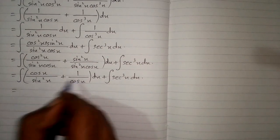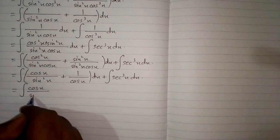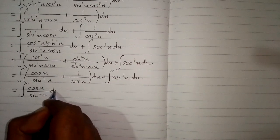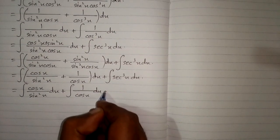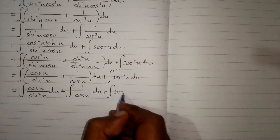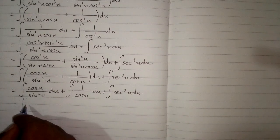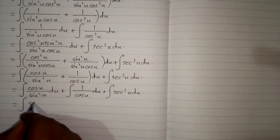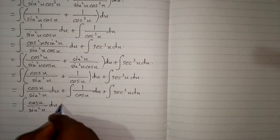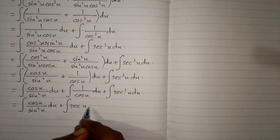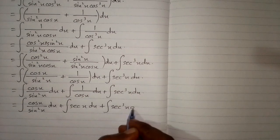We apply the integral on both fractions, giving us the integral of cos x upon sine squared x dx, plus the integral of 1 upon cos x dx, plus the integral of sec cubed x dx. This can be written as the integral of cos x upon sine squared x dx, plus the integral of sec x dx, plus the integral of sec cubed x dx.